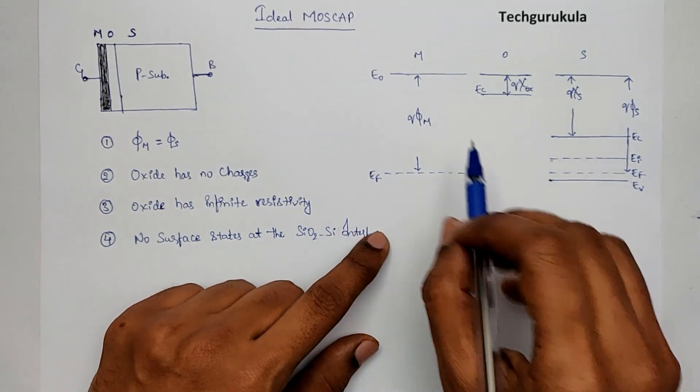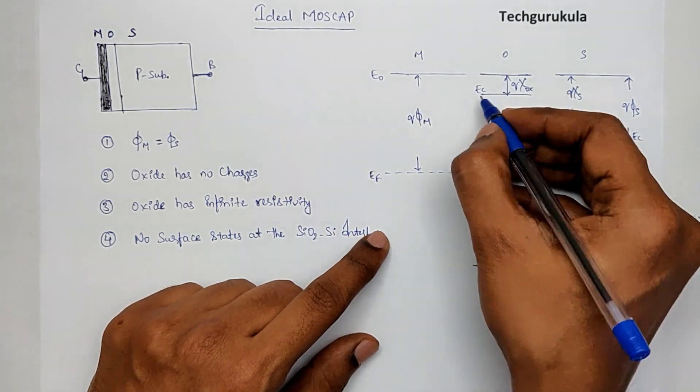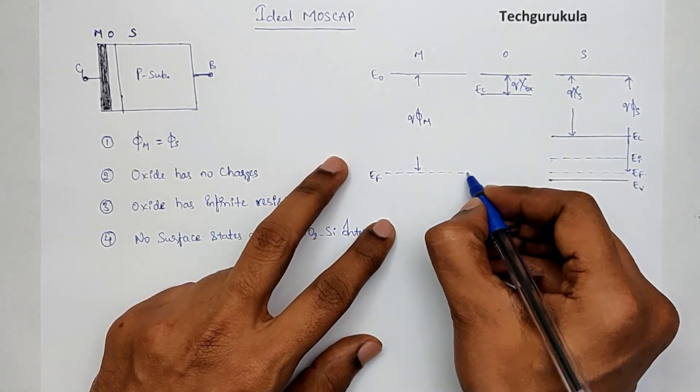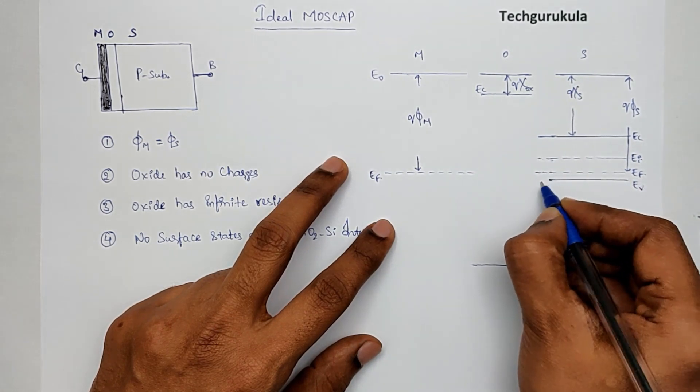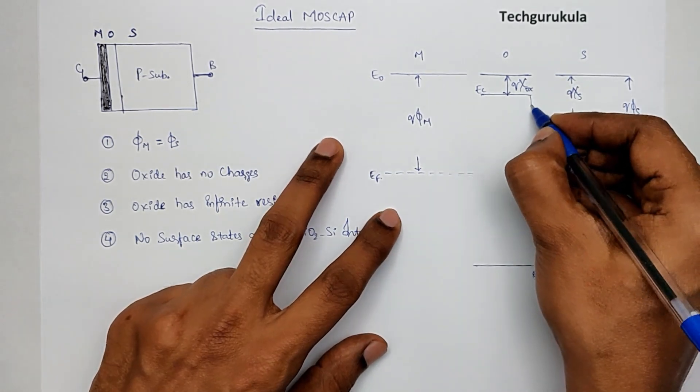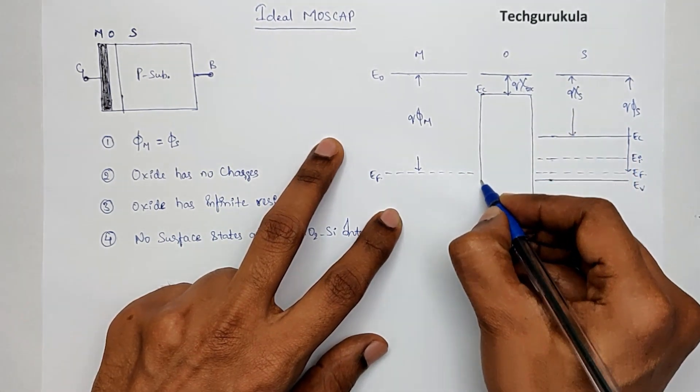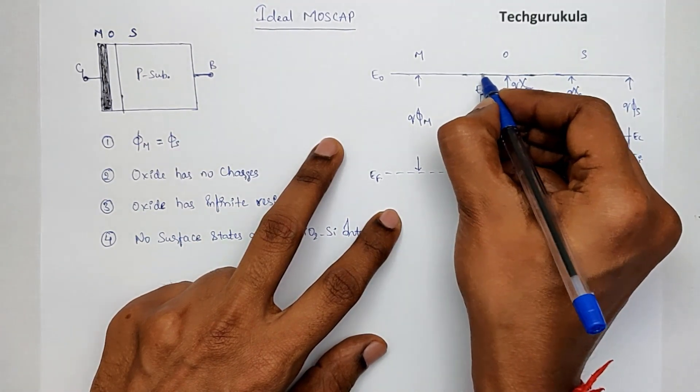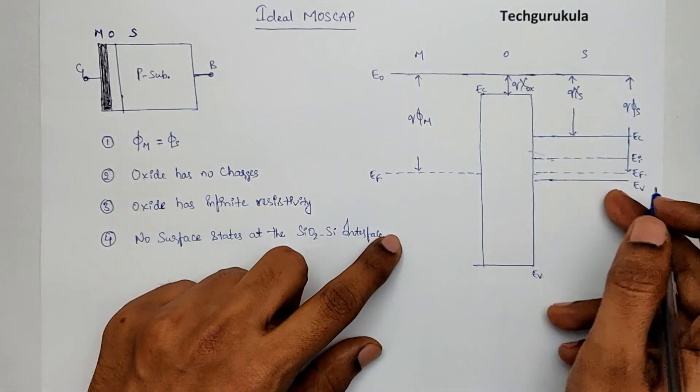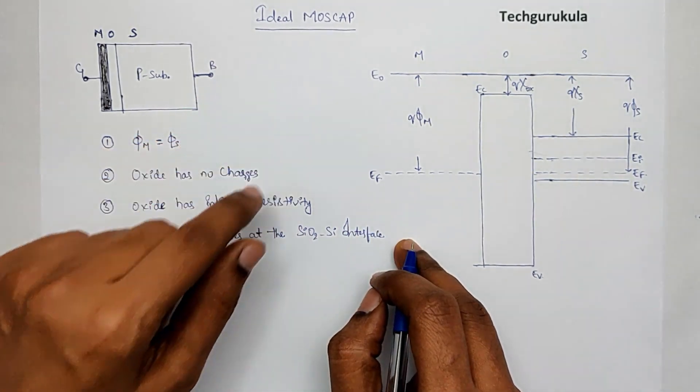Now, given all this, because the vacuum energy level is same for all of them and we can extend this energy levels till the oxide and draw it like this. Now, even the vacuum energy level would be constant. So, this is how the energy band diagram would look for an ideal MOS cap.